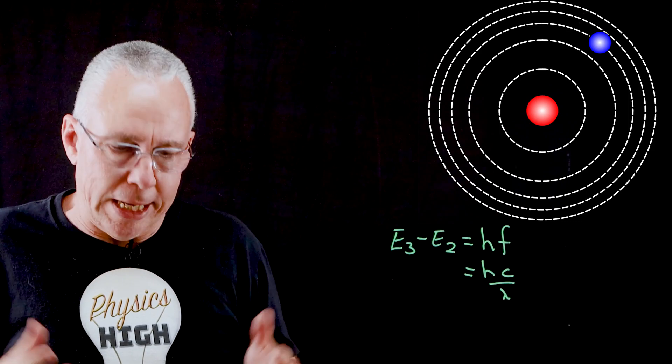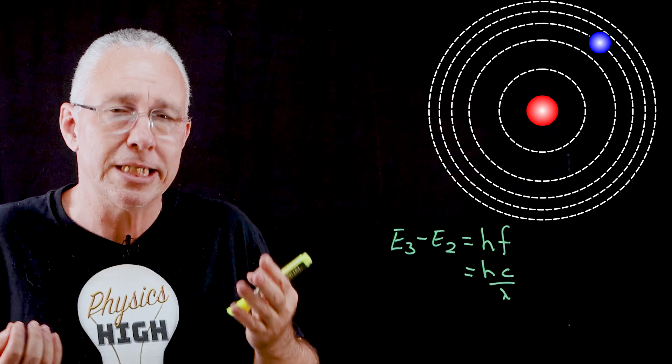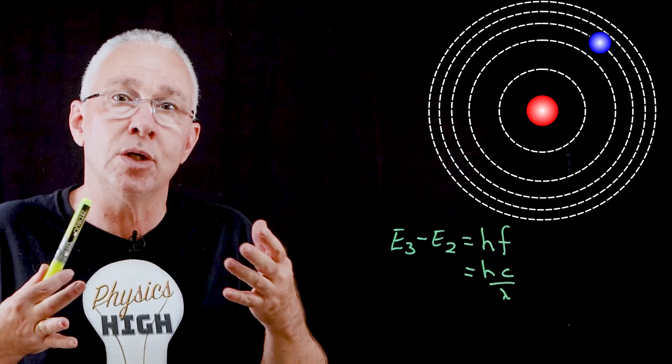But why is it glowing? Well, these electrons can jump back down again, and they do so spontaneously. As a result, because of conservation of energy, they have to emit a photon.